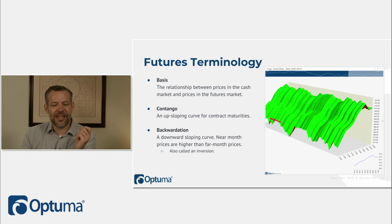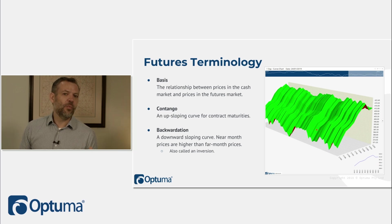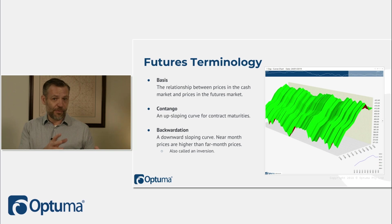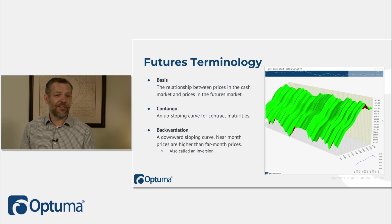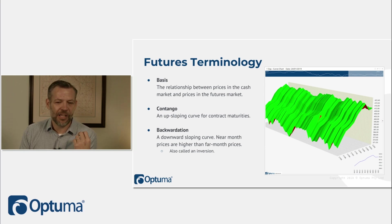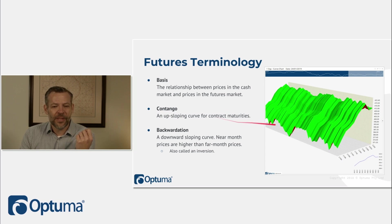Basis is the relationship between the futures price and the cash price. For example, with wheat, there's a futures contract price for June delivery, but there's also a cash price for buying wheat today. Basis is simply the relationship between those two prices.